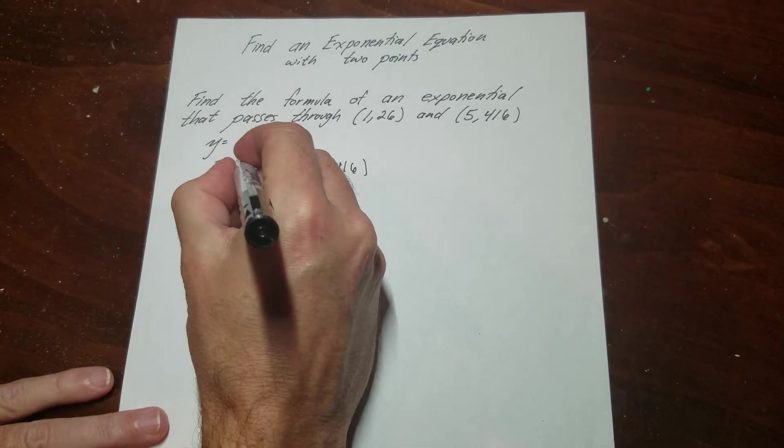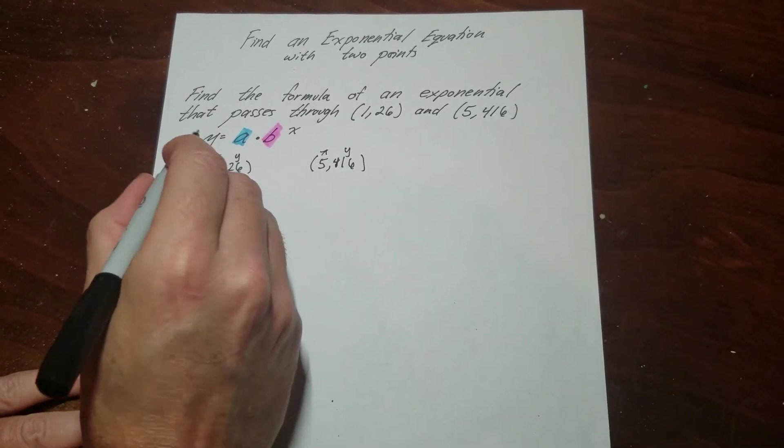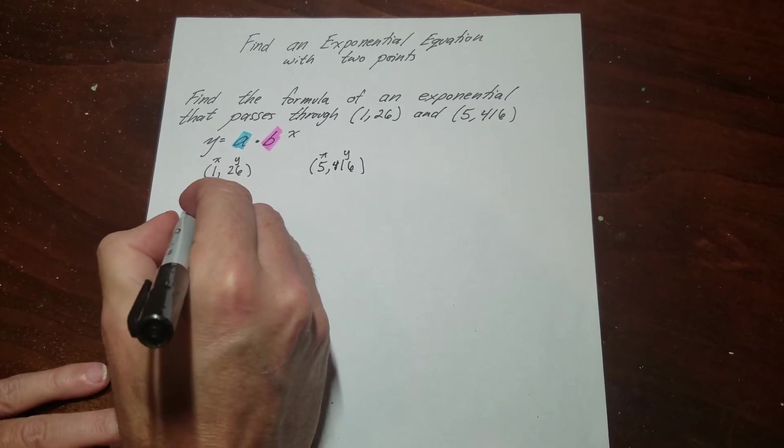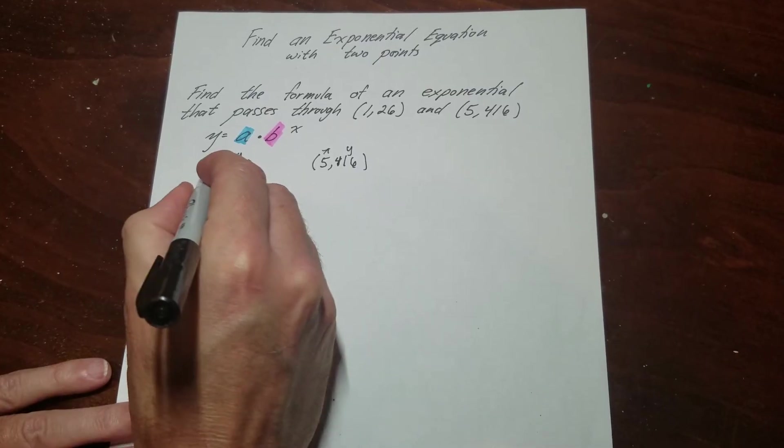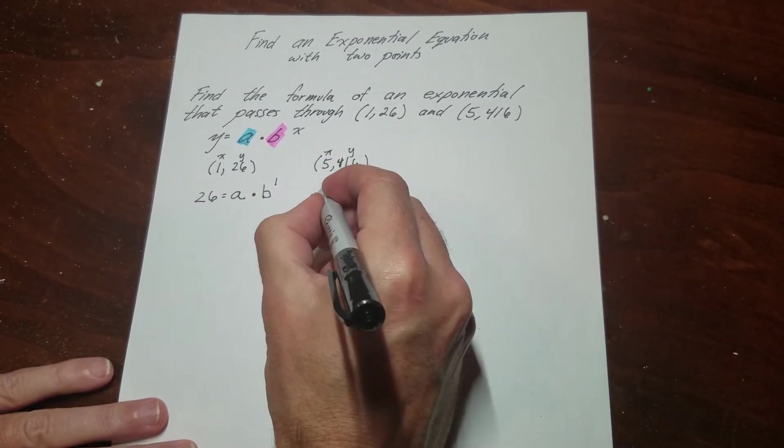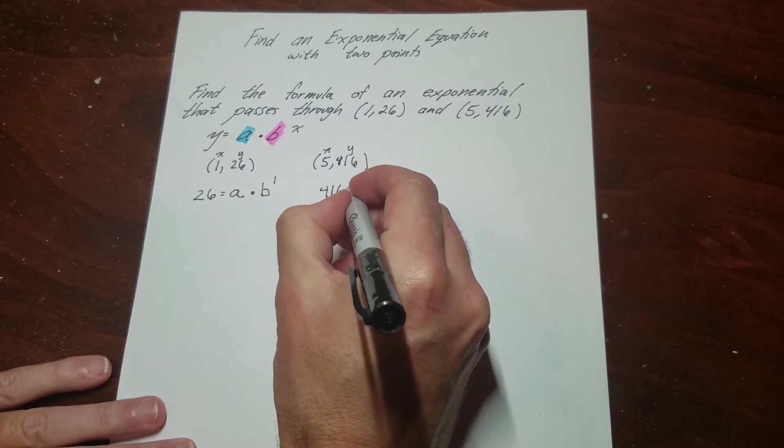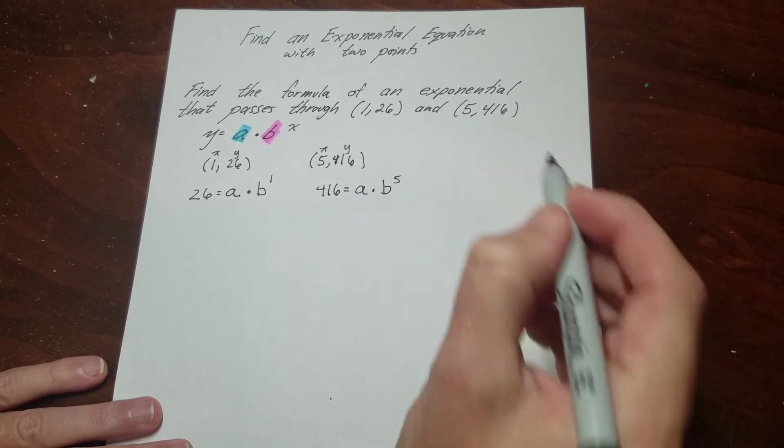So remember, this is my x and this is my y, this is my x and this is my y. So for this one, my y is 26. I have no idea what a is, I have no idea what b is, but it's to the power of 1. And then this one right here, my y is 416. I have no idea what my a is, no idea what my b is, but I know it's to the power of 5.